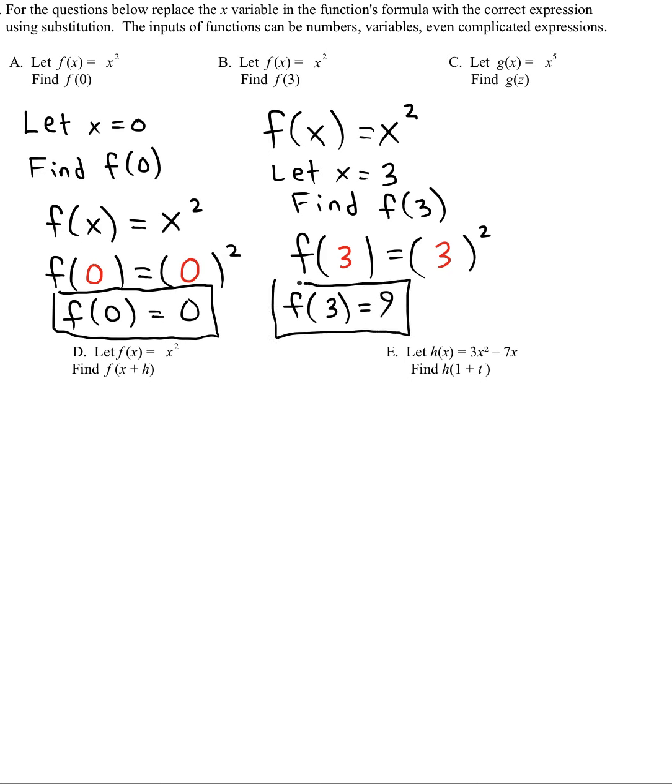This is a function which squares the input, multiplies it by itself. Now it's a little trickier because here our input is not a number. It's a variable, z.